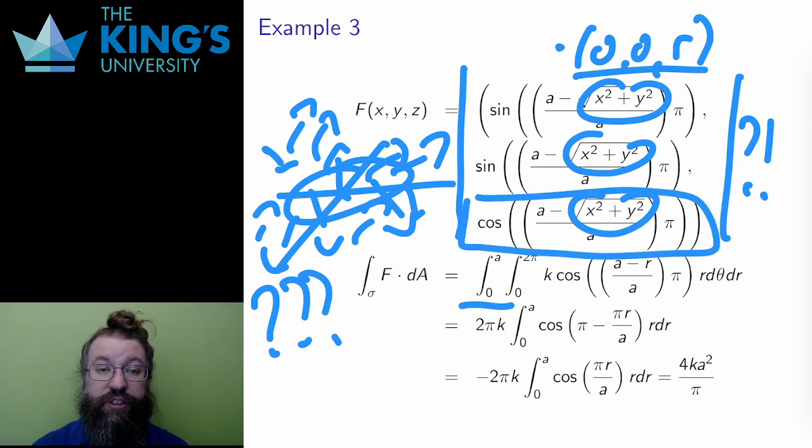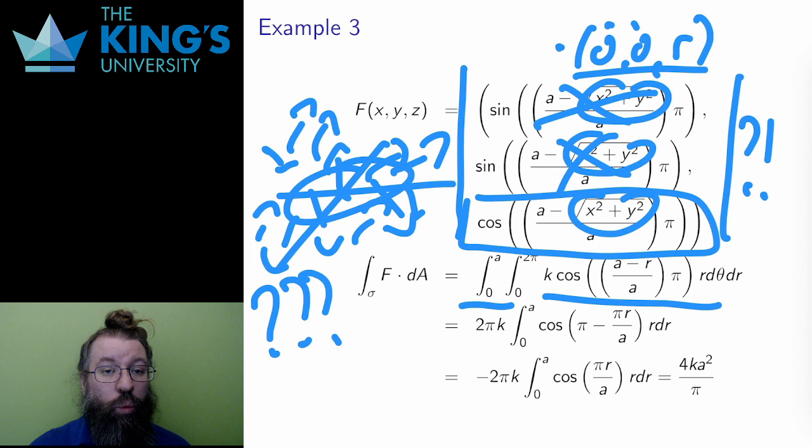The dot product with the normal is just the third component times r, since the normal is still (0,0,r). Therefore, I get this integral, the integral of the dot product of the field evaluated along the surface, with the normal of the surface integrated over the parameter domain.